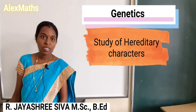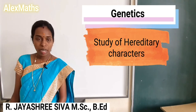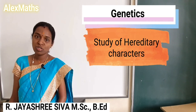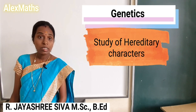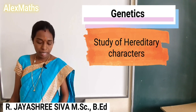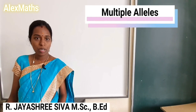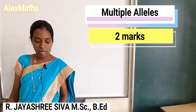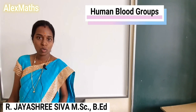Genetics is the study of hereditary characters. The first hereditary character to note is the gene. One of the genes involves multiple alleles. Multiple alleles is important — it is likely to come for two or more exam questions. An example from your textbook is human blood groups.